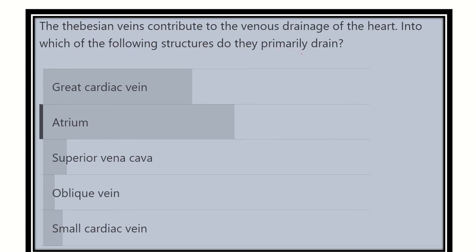So it is a short question: the Thebesian vein, which is a vein of the heart, drains blood into the heart. Now we have to find out the structure where the Thebesian vein drains its blood supply.